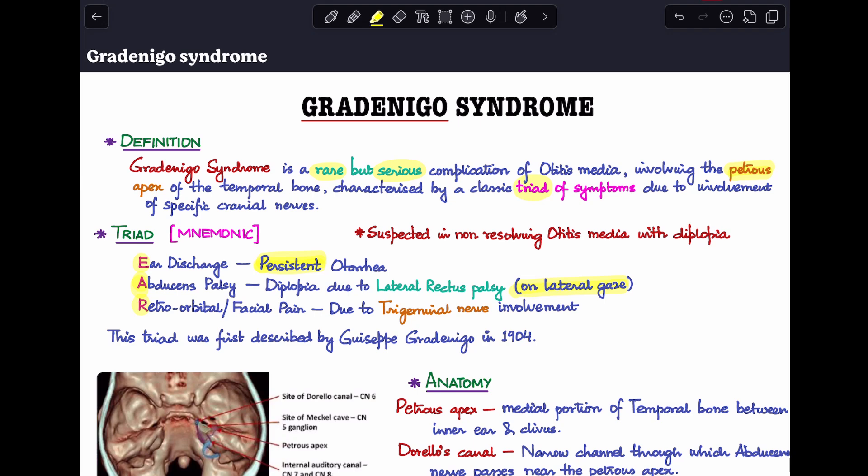The mnemonic to remember is EAR: E for ear discharge, A for abducens palsy, and R for retro-orbital pain. This triad was first described by Giuseppe Gradenigo in 1904.